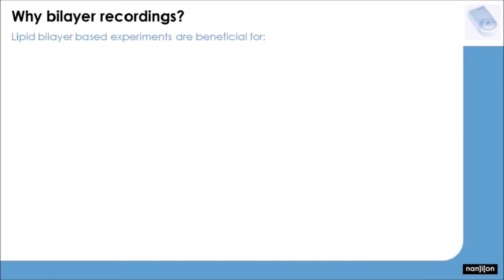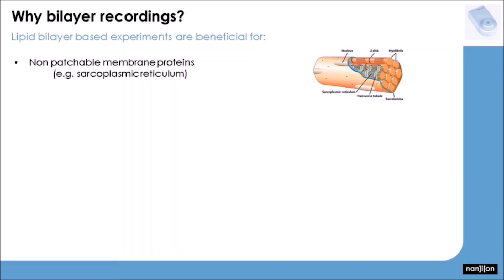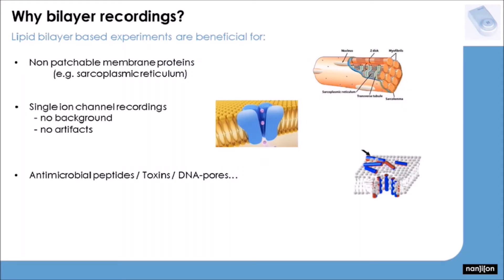So why would anyone choose to perform experiments on bilayers? Well, you could, for example, investigate proteins of membranes you could not reach by patch clamping, like the ones of the SR, the ER, the nucleus, mitochondria, or basically any other cell organelle. This approach would furthermore simplify experiments on single channels, as you would not have to deal with any background artifacts, and you would have a realistic chance to investigate single proteins on a regular basis. You could also investigate species like antimicrobial peptides, toxins, DNA pores, or basically anything that will form an aperture in a lipid membrane.